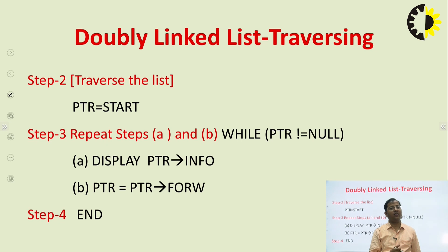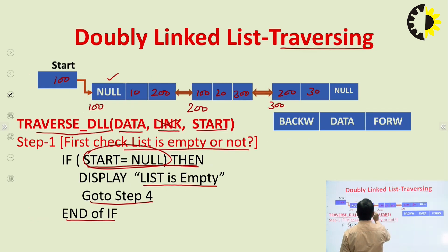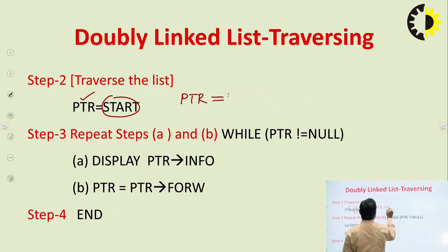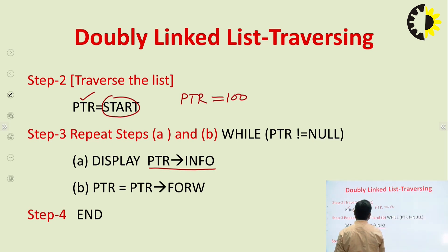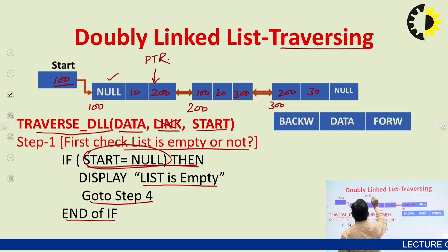Because after traversing, if we use the start pointer, start will contain null, and in that case if we want to again access the doubly linked list we cannot find its beginning. So we use a temporary pointer ptr — we store the value of start in ptr. ptr will contain the address of the first node. Now we simply display the information using ptr arrow operator to access the member of the structure.